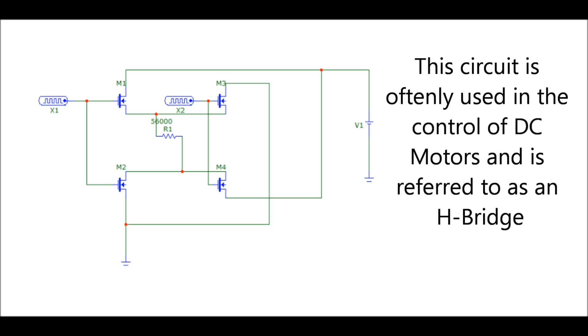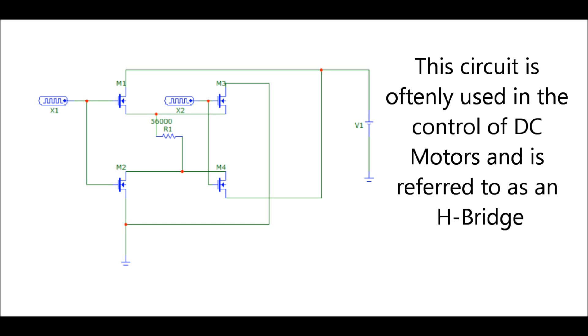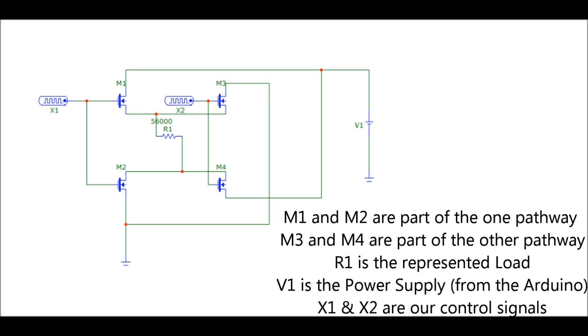All it requires is four electronic switches. In this case I'm using MOSFETs. Two MOSFETs are turned on at one time along a pathway to occur over the load, and then when they're off, the other ones are on, making an alternative pathway for the current to flow.